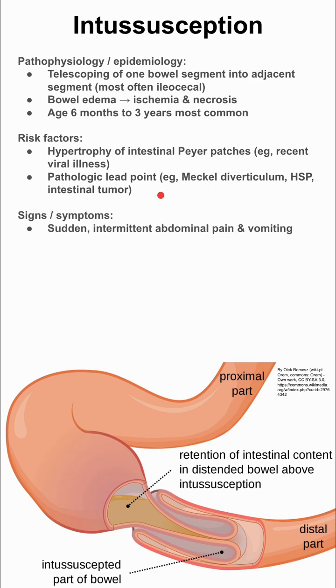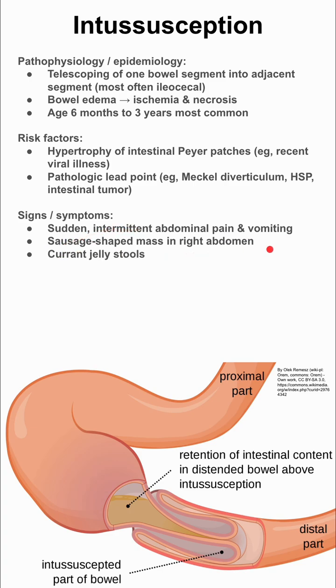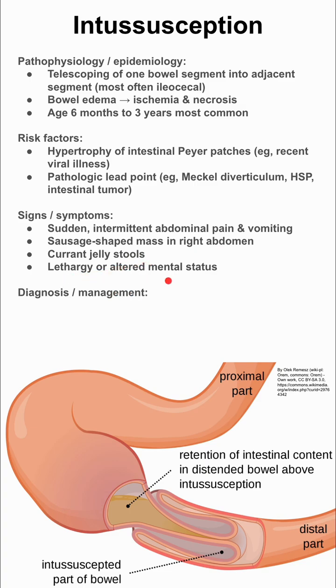Signs and symptoms of intussusception include sudden intermittent abdominal pain and vomiting, a sausage-shaped mass in the right abdomen, and currant jelly stools — bright red stools that look like currant jelly. The patient might also be lethargic or have altered mental status.